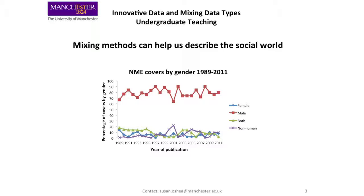The male line represents men who have appeared on the cover of the music magazine. 'Both' represents women and men who have appeared on the cover of the NME, and 'non-human' represents other types of artefacts that appeared on the cover of the magazine.